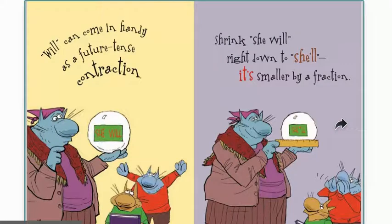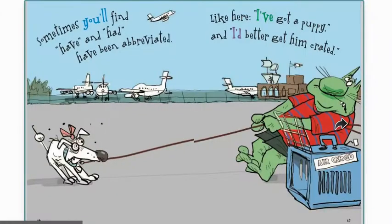Will can come in handy as a future tense contraction — shrink 'she will' down to 'she'll'; it's smaller by a fraction. Sometimes you'll find 'have' and 'had' have been abbreviated, like 'I've got a puppy and I'd better get him crated.'